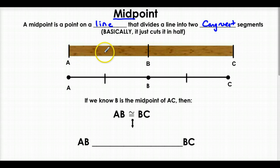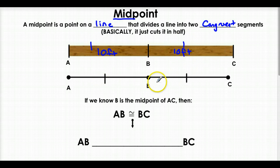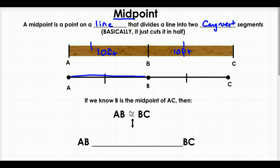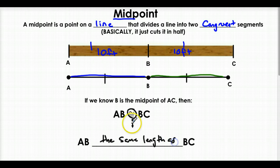Let's look at a piece of wood. Let's say B is our midpoint — right in the middle. If AB, this part of the wood, is 10 feet long, and B is right in the middle, then BC is also 10 feet. 10 feet this way, 10 feet this way — so they're congruent. The same conclusion applies here: if B is the midpoint of AC, then AB is congruent to BC — these two are the same length. This symbol just means the same length as, so instead of saying same length, I say congruent.